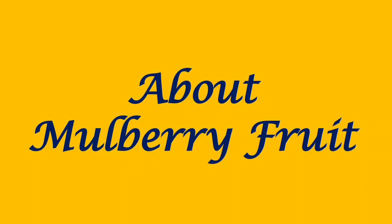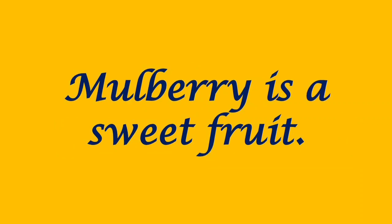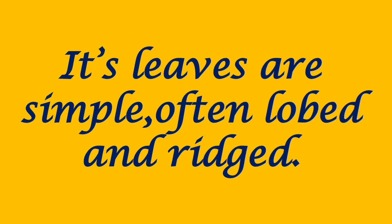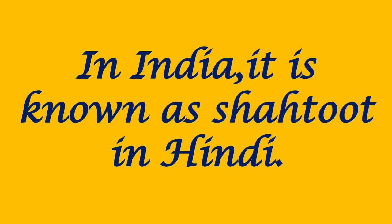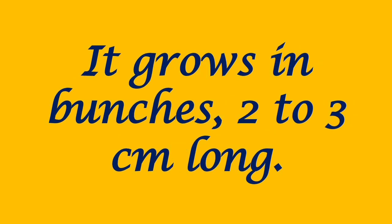About Mulberry Fruit. Mulberry is a sweet fruit. Its leaves are simple, often lobed and serrate. It has several varieties that can be white, lavender, dark purple or purplish black. In India, it is known as Shahtooth in Hindi. It grows in bunches 2-3 cm long.